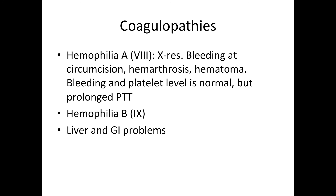Hemophilia B is essentially the same as hemophilia A, but the difference is that it's a factor IX deficiency. Acquired coagulopathies can result from liver cirrhosis, since clotting factors and other proteins needed for coagulation are synthesized in the liver — if it fails, there will be excessive bleeding. GI problems such as steatorrhea and excessive antibiotic use can also be causes.